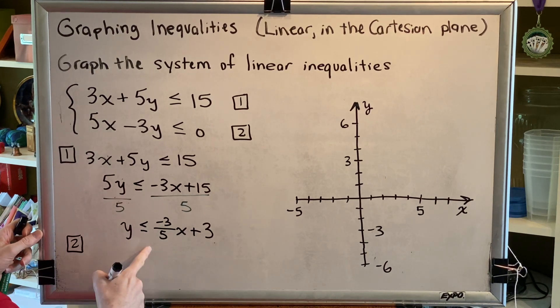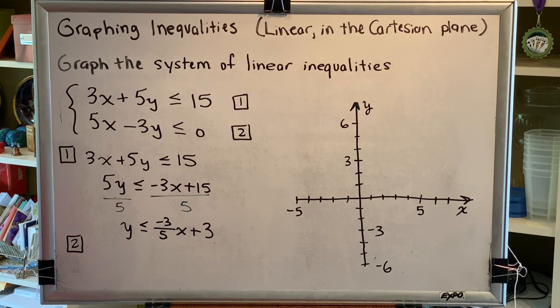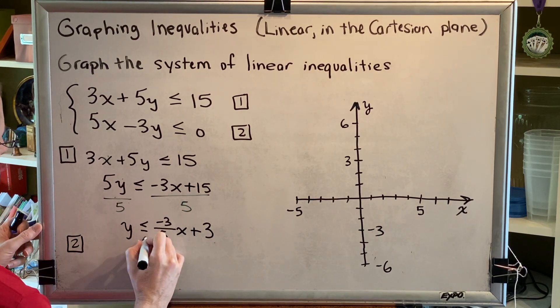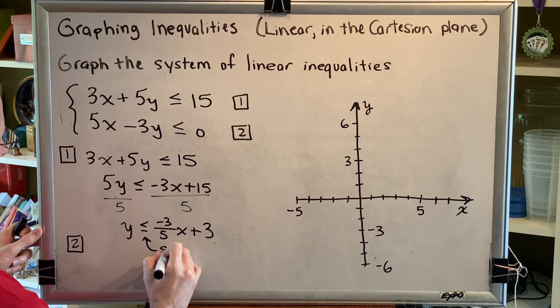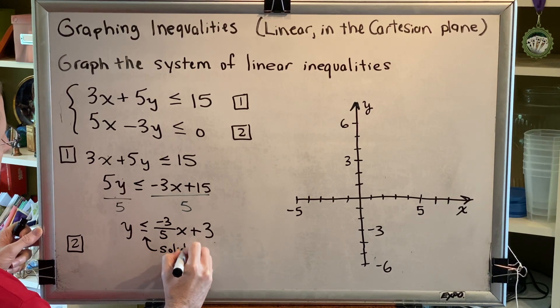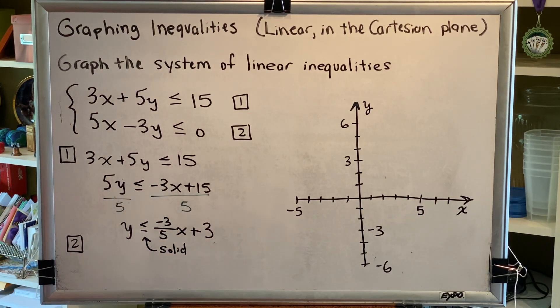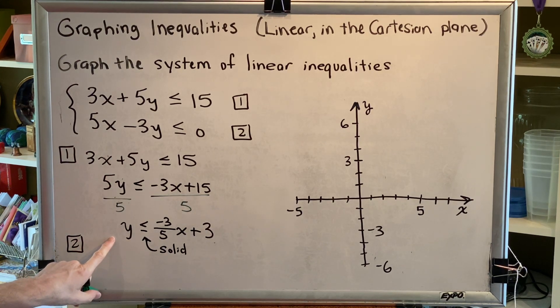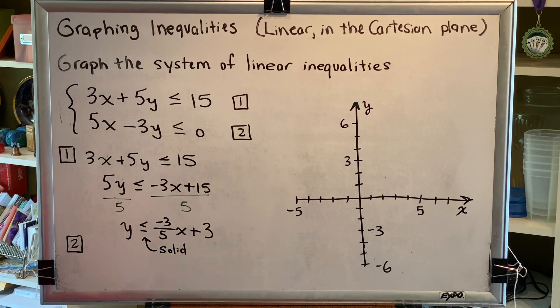Step two is to pretend that this says equals and to draw the line using an appropriate line type. Because our inequality symbol says less than or equal to, we're going to use a solid line type. The method we're going to use to graph this is the slope-intercept method because we are in slope-intercept form. The y-intercept is 3.